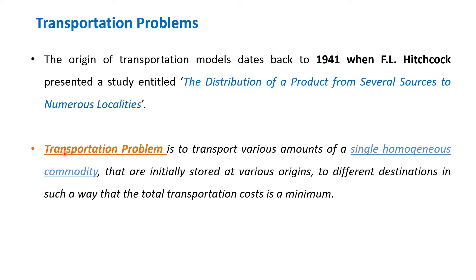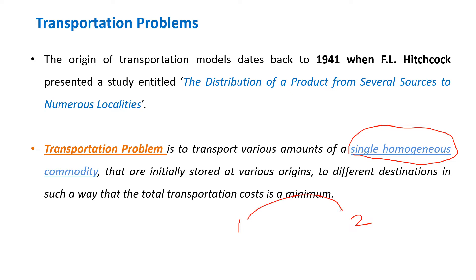The transportation problem is to transport various amounts of a single homogeneous commodity, initially stored at various origins, to different destinations in such a way that the total transportation cost is minimum. In a transportation problem, when you are transferring goods it should be considered as a single homogeneous commodity — that means the goods should be of the same kind, not different categories or items. When you transfer the same products from one location to another, the transportation cost will be the same.